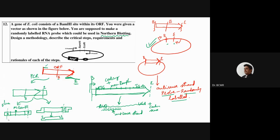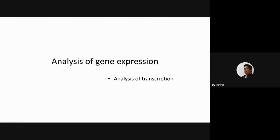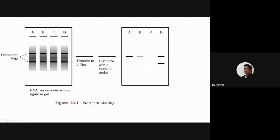In the last class we were discussing several techniques involved in analyzing genetic variation, and today we will learn some techniques about analyzing gene expression. In gene expression there are usually several things - one is analysis of transcription, and we will also have analysis of translation at the level of protein. Today we will mostly talk about how to quantify the amount of mRNA, so we are doing analysis of transcription.